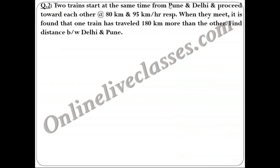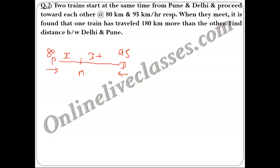Question 2: Two trains start at the same time from Pune to Delhi and proceed towards each other at 80 and 95 km/hr respectively. When they meet, it is found that one train has traveled 180 km more than the other. Let the meeting point be M. If the shorter distance is x, then the longer distance is x + 180, since the faster train covers more distance.